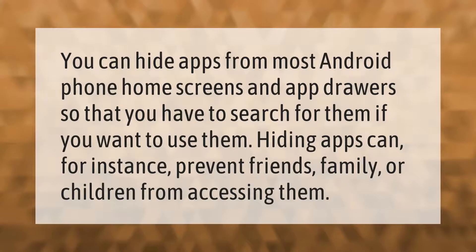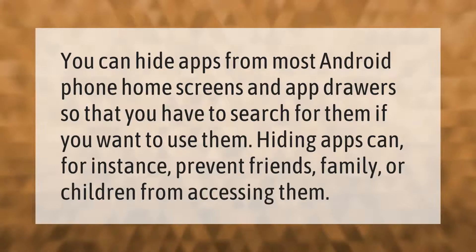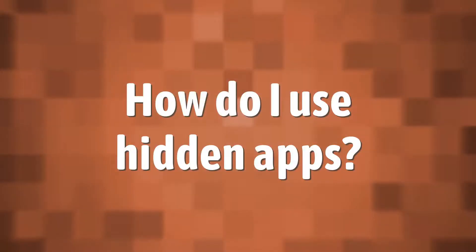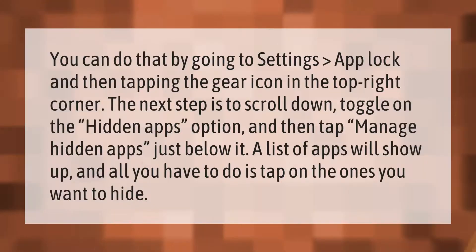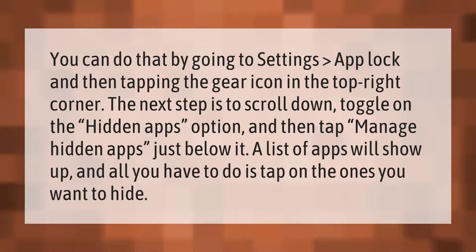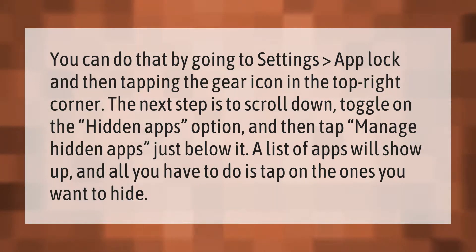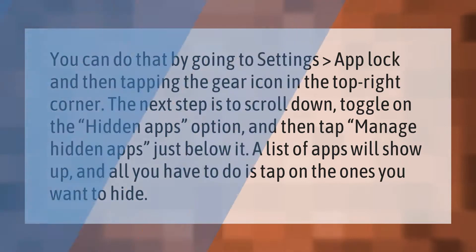You can hide apps from most Android phone home screens and app drawers so that you have to search for them if you want to use them. Hiding apps can, for instance, prevent friends, family, or children from accessing them. You can do that by going to Settings, then App Block, and tapping the gear icon in the top right corner. Scroll down, toggle on the Hidden Apps option, and then tap Manage Hidden Apps just below it. A list of apps will show up and all you have to do is tap on the ones you want to hide.